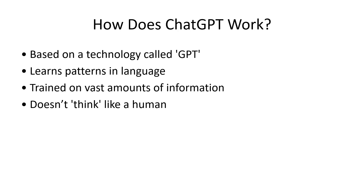How does ChatGPT work? ChatGPT, or GPT itself, stands for Generative Pre-trained Transformer. It's a fancy term for software trained to understand and generate human language. It learns patterns in language — it's trained on vast amounts of information, but it doesn't think like a human.